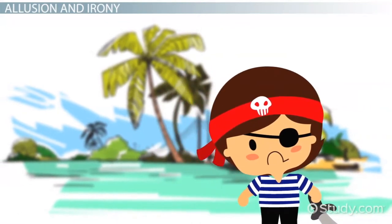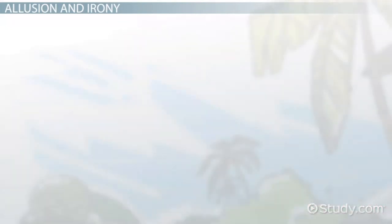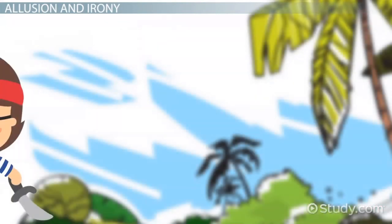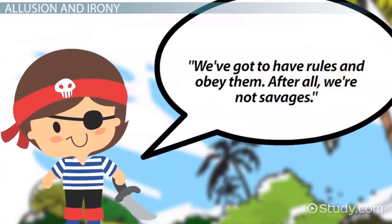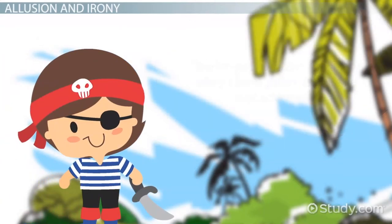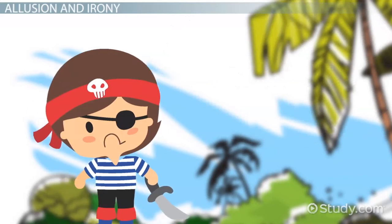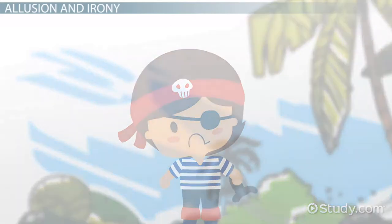Another specific example of irony occurs in Chapter 2, when Jack states, "We've got to have rules and obey them. After all, we're not savages." The ironic part of this statement is that Jack leads the savage group who kills Piggy.